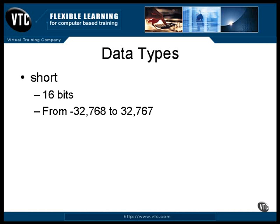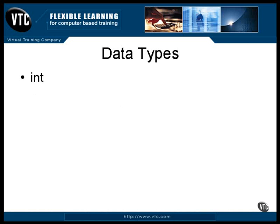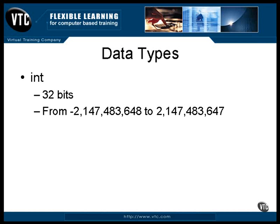That's minus 32,768 to 32,767. An int data item is an integer value the next size up from a short — it's 32 bits in size. This is probably the most used of all the variable types. Its range covers all the values required for normal operation, from negative 2 to the 31st up to 2 to the 31st minus 1.